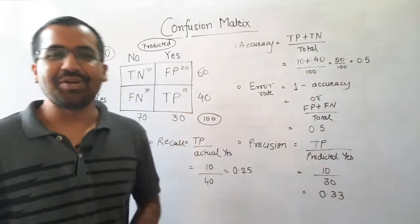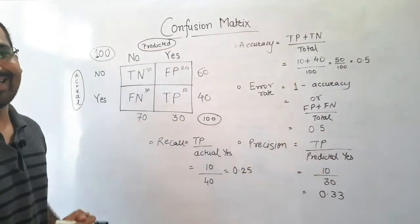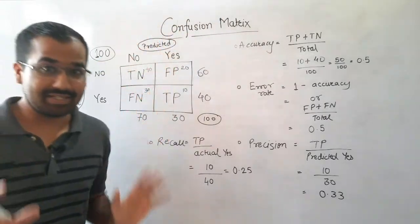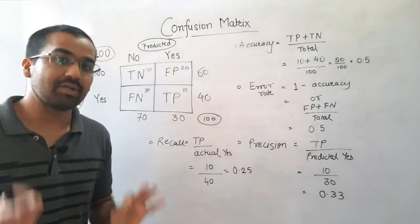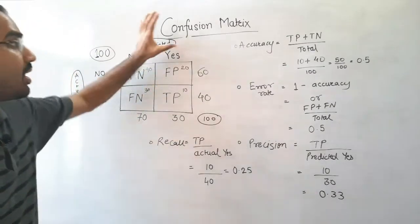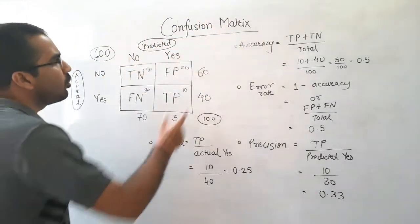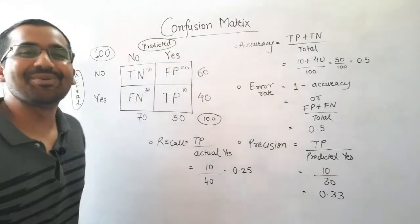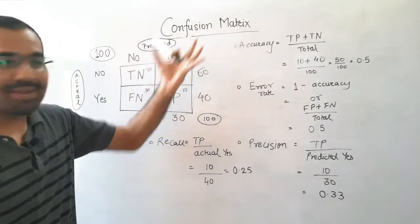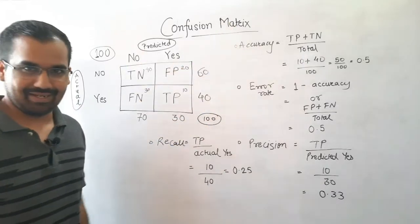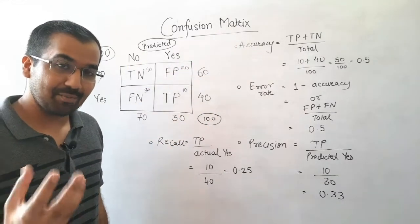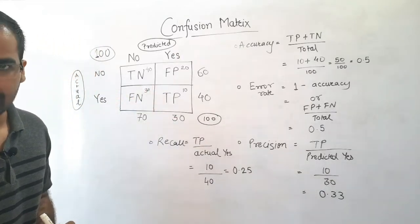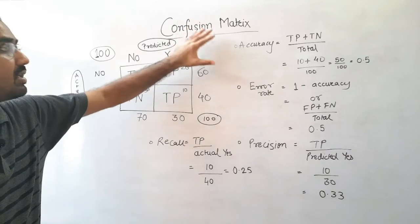Hello and welcome friends. In today's video we are going to be understanding a very funny but at the same time very important concept in machine learning: the confusion matrix. We know what a matrix is, but what is so confusing about it that the name itself is 'confusion matrix'? I'm going to resolve that confusion and make things simple with an example.